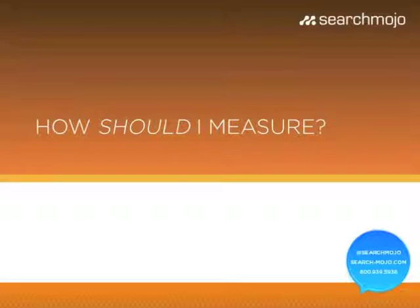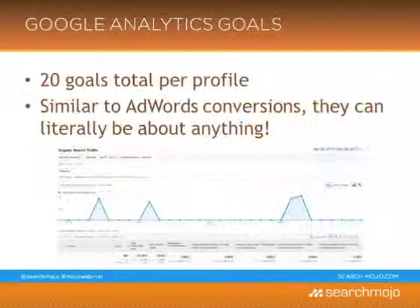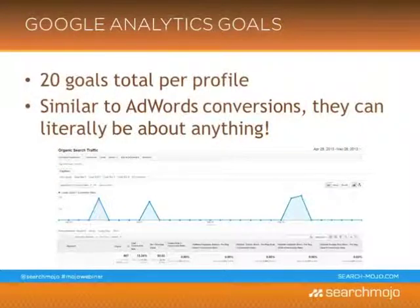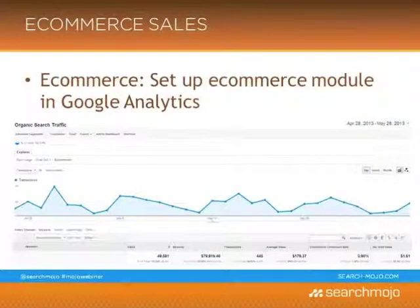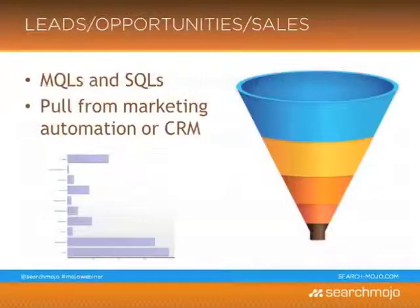The first thing you want to measure — which is fairly simple and straightforward — is your organic site traffic. If you have Google Analytics installed, you definitely want to set up Google Analytics goals. Now, if you're in eCommerce, your goal is typically not leads but direct sales right through the website. So another piece in Google Analytics you want to consider setting up is the eCommerce module.